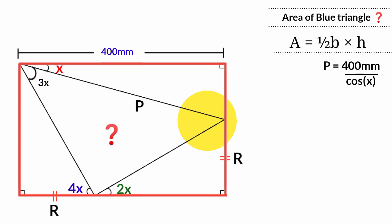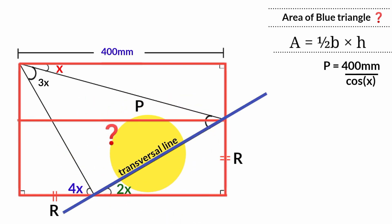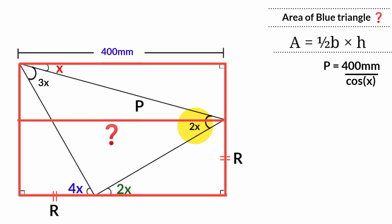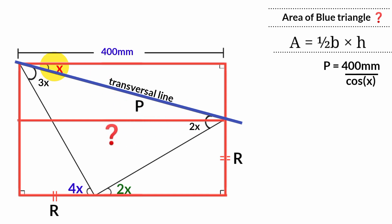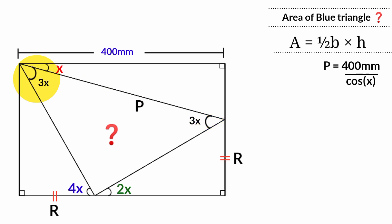Here also, to find the size of this angle, we can draw a line parallel to these two sides from this point to this point. This line is a transversal between the two parallel sides, so this angle and this angle are alternate angles and therefore equal — this angle is also 2X. Removing that construction line, the whole angle here is 2X plus X, which is 3X. We can see that this angle is also 3X.